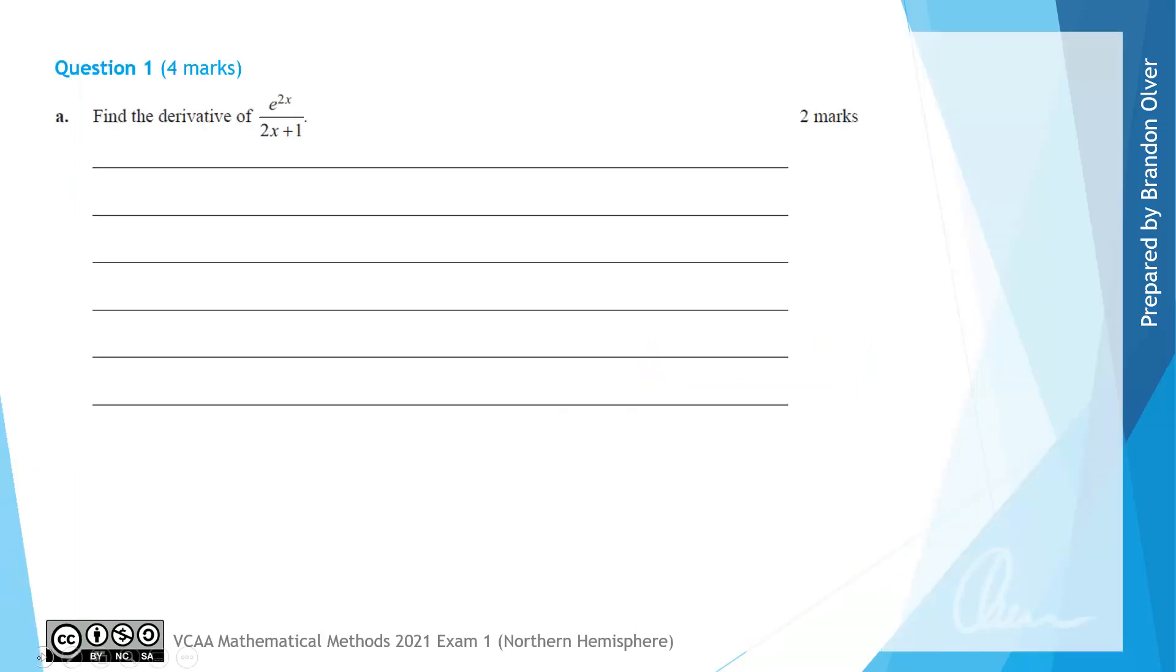For question 1a, we're asked to find the derivative of e^(2x) divided by (2x + 1). And we can see, because we have one function divided by another function, we can use the quotient rule to differentiate this.